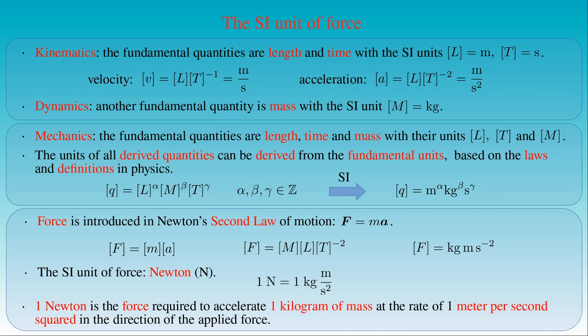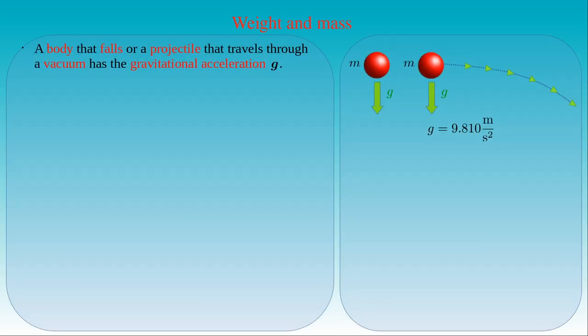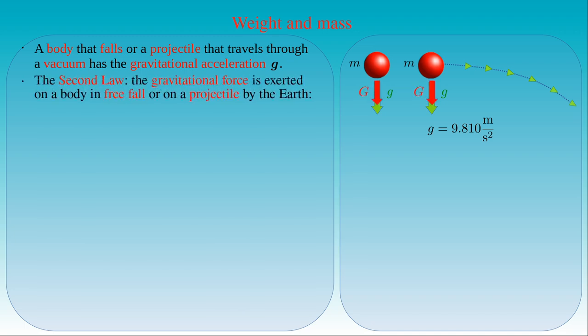For example, we can easily determine the magnitude of the gravitational force acting on any object. If a mass of 1 kilogram rests on a table, the downward force on the table is equal to 9.81 Newtons. We continue the study of free fall and projectile motion in dynamics by introducing the concept of weight. A body that falls or a projectile that travels through a vacuum has a gravitational acceleration g, with an average value of 9.81 m/s² at sea level directed downward. Since free-falling bodies have acceleration, we conclude from Newton's second law that a force is exerted on a body in free fall by the earth, which is called gravitational force.